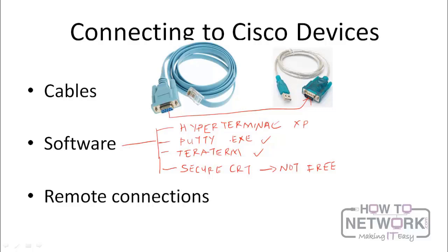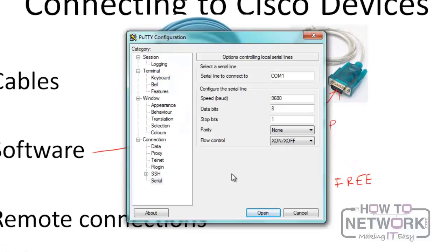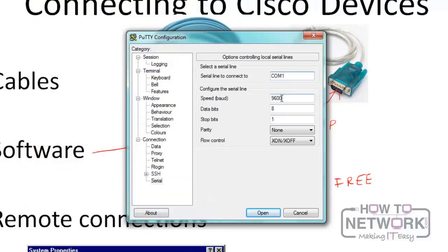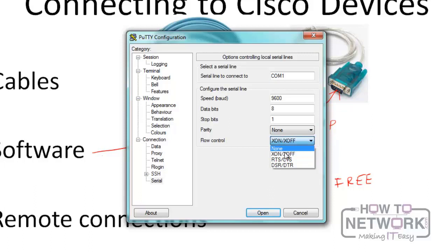If you want to just download a fast software to use, I advise PuTTY. The settings on PuTTY are pretty much the same on all the other softwares. The type of connection you want to choose is a serial connection, and then you choose the serial line you're connecting to. If you have a serial port in your system, it would typically be COM1, but it may differ if you're using a USB to serial converter — check your Device Manager. Cisco recommends setting the speed, also called the baud rate, to 9600; data bit to 8; stop bit to 1; parity to none; and flow control to none. Based on these settings, you can connect directly to the console port of the Cisco device.